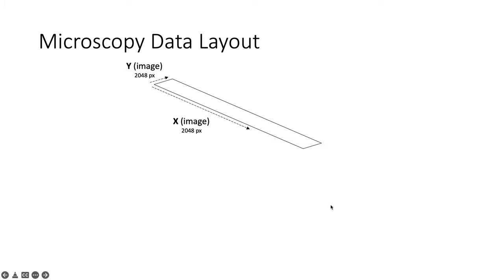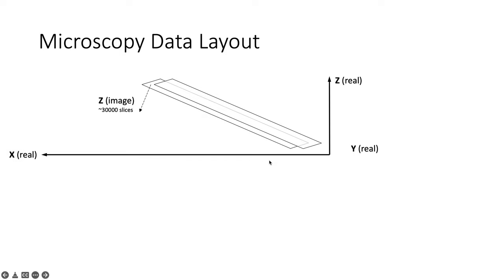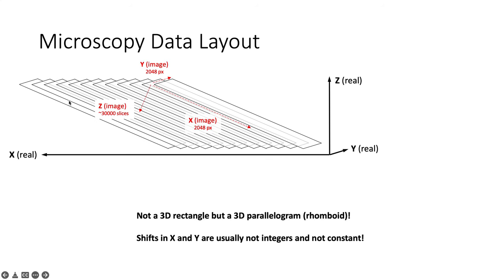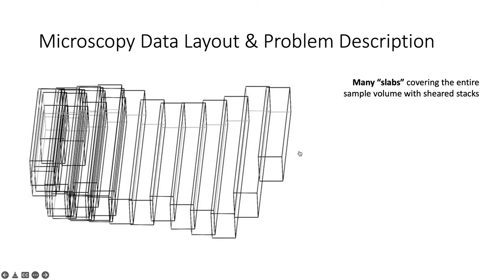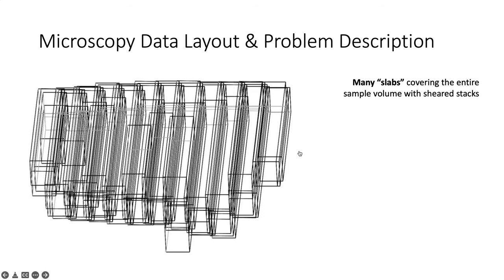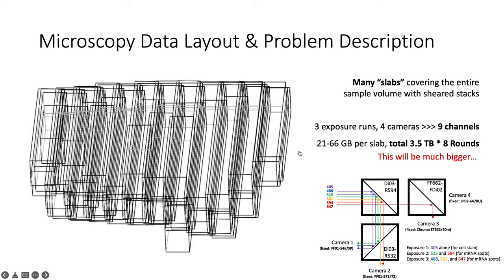I want to quickly explain the difference in the type of stacks you acquire here. Compared to the classical setup, you take a sheared dataset. You have your images, X-Y, 2000 by 2000 pixels, that's the actual stage. Then you move your objectives along that stage and you take something that is an image stack as you acquire it, but it's actually a parallelogram. Additionally, the shift in X and Y are usually not integers and they're not constant. The stage tells you it's a few microns, then it ends up not being a few microns but plus or minus five percent. You take these stacks, and same as with classical light sheet microscopy, you take many many stacks that cover an entire sample. In this case we had a total of 3.5 terabytes times eight rounds, and that's just one little part of the mouse brain.